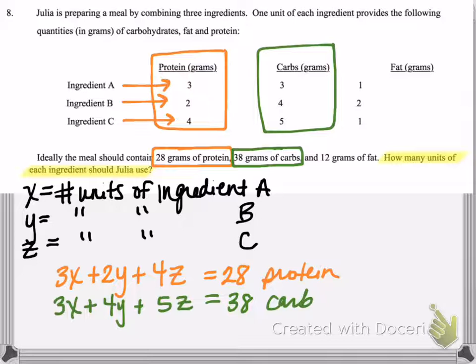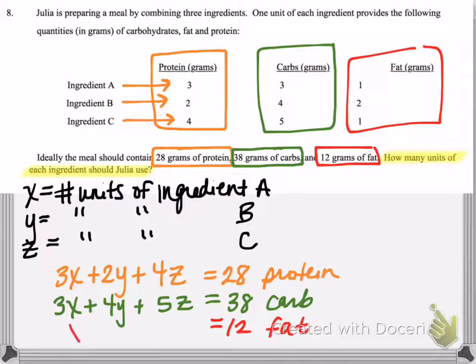And lastly, we need to have 12 grams of fat, so we'll create a fat equation. The fat is here in the last column. That would be 1X plus 2Y plus 1Z is equal to 12.